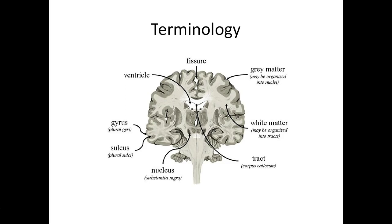Hopefully you remember that white matter is myelinated axons and the gray matter is cell bodies. Most of the gray matter is right around the very edge of the brain — that's where those cell bodies are — and the white matter is in the center, where all of those cell bodies are connecting to each other and down into the spinal cord.